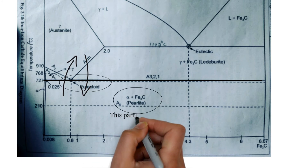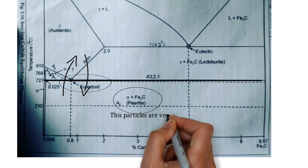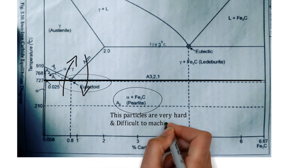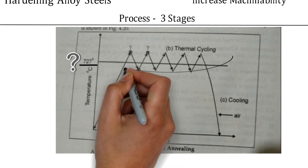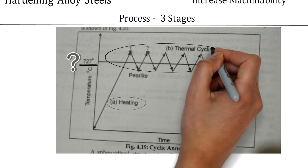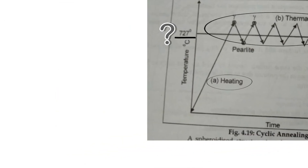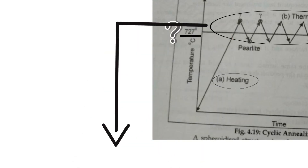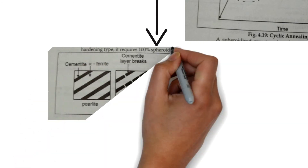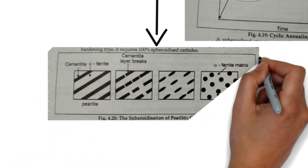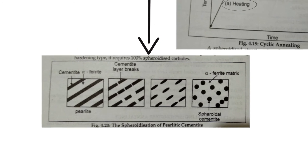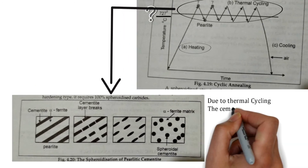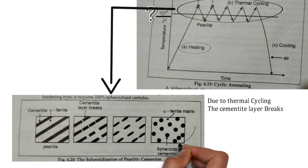The alpha iron and cementite particles are very hard and difficult to machine because the hardness is very high. So thermal cycling is carried out — heating and then cooling, heating and then cooling. During this thermal cycling, the cementite layer breaks.